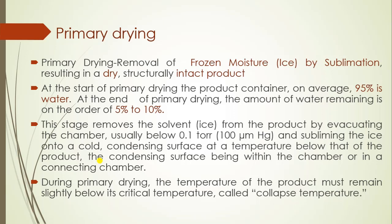This stage consists of sublimation of ice from the product by evacuating the drying chamber usually below 0.1 torr, and sublimating the ice on a cold condensing surface. The temperature of the condenser must be below the temperature of the product. Sometimes condensers are kept in the same chamber and sometimes in a connected chamber. During primary drying, the product temperature must remain below its critical temperature, called the collapse temperature. For crystalline substances it is denoted as eutectic temperature, and for amorphous substances it is denoted as glass transition temperature. During primary drying, the product temperature must remain at least 5 degrees below its collapse temperature.